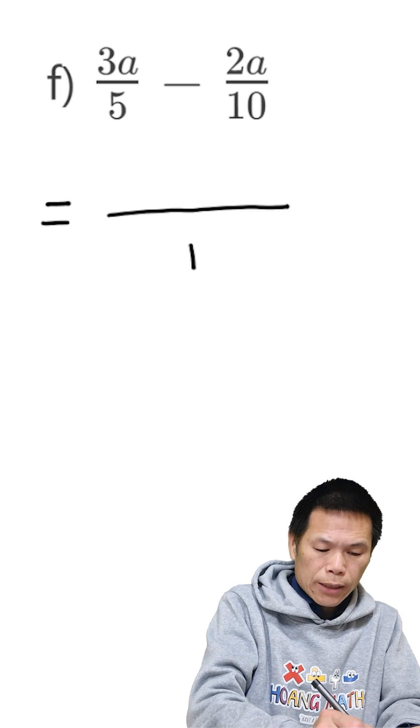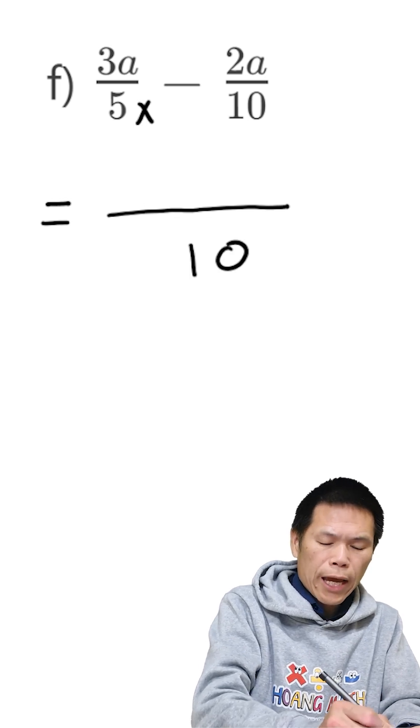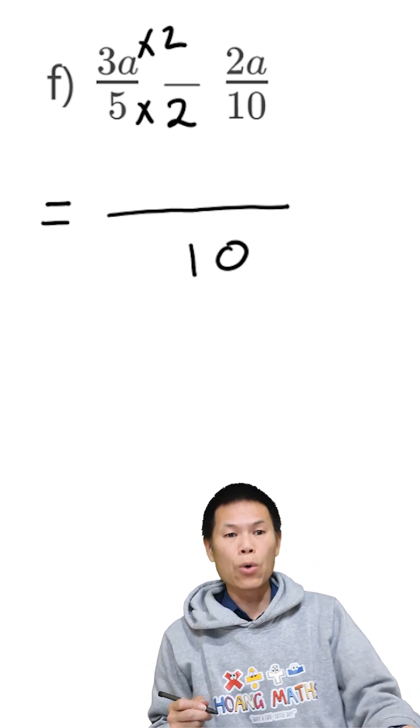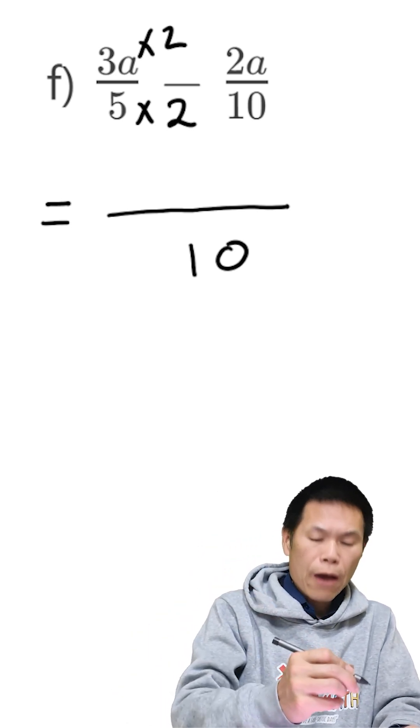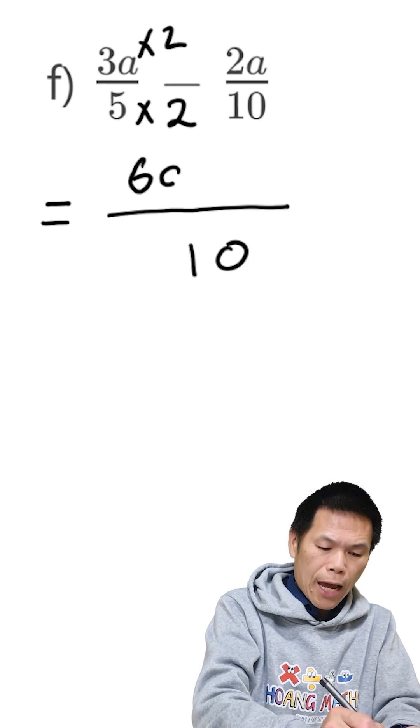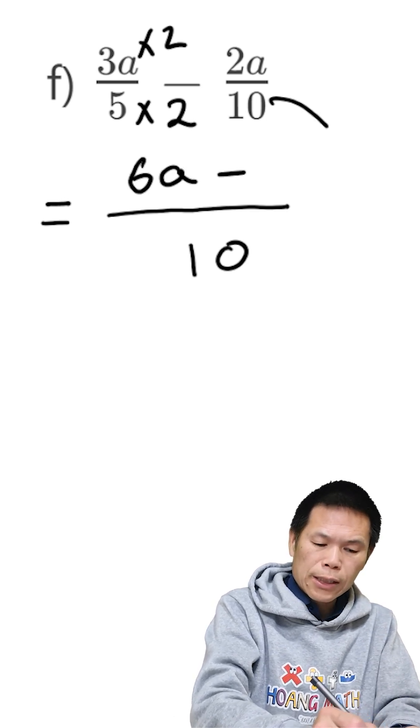To get to 10 from 5, we times 2, so therefore the top must times by 2 as well. Therefore we have 3 times 2 is 6, so 6a minus...